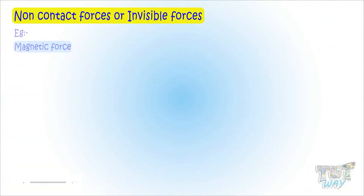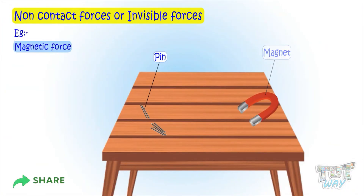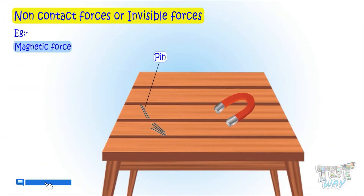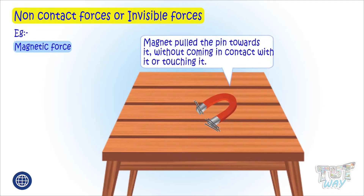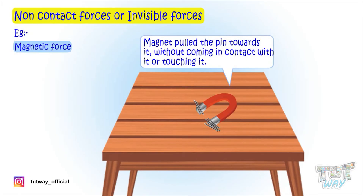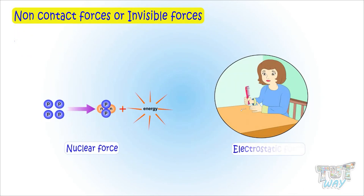Another example of non-contact force is magnetic force. Here is a pin — now bringing a magnet closer to it, the magnet attracts the pin. That is, the pin is moved towards the magnet without any contact between the pin and the magnet. So there is an invisible, or non-contact, force acting here. More examples of non-contact forces are nuclear force and electrostatic force.